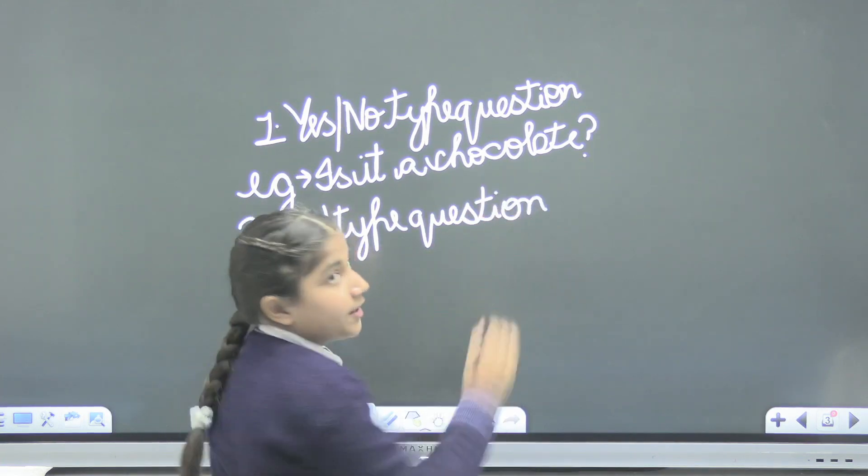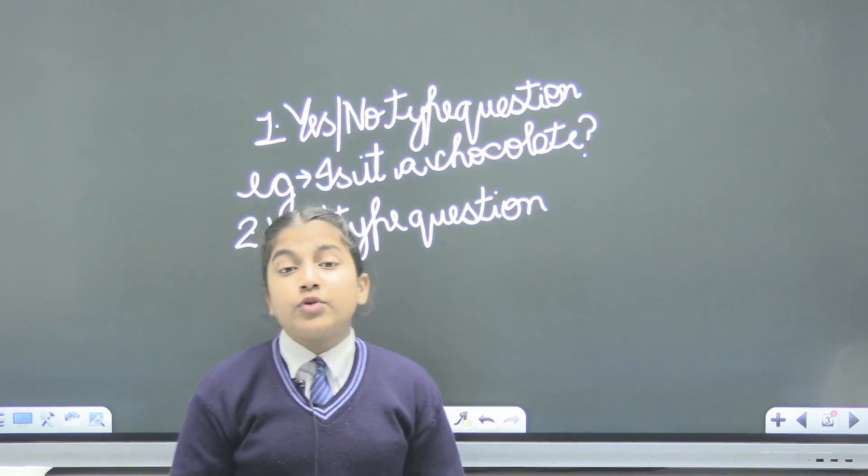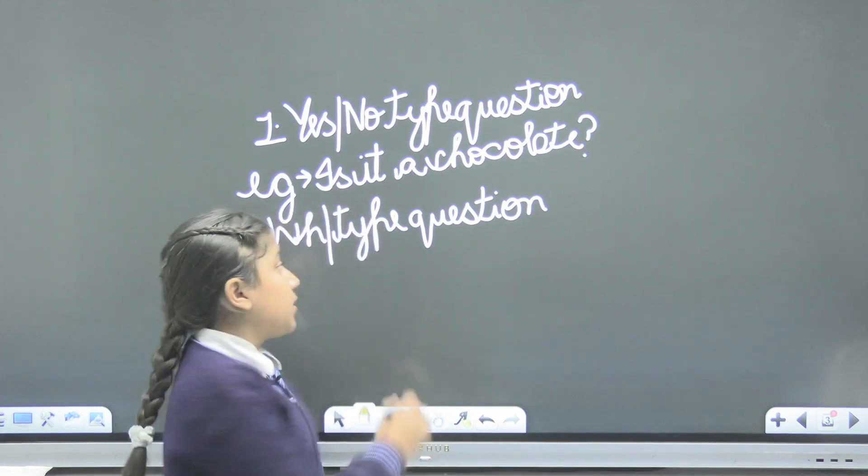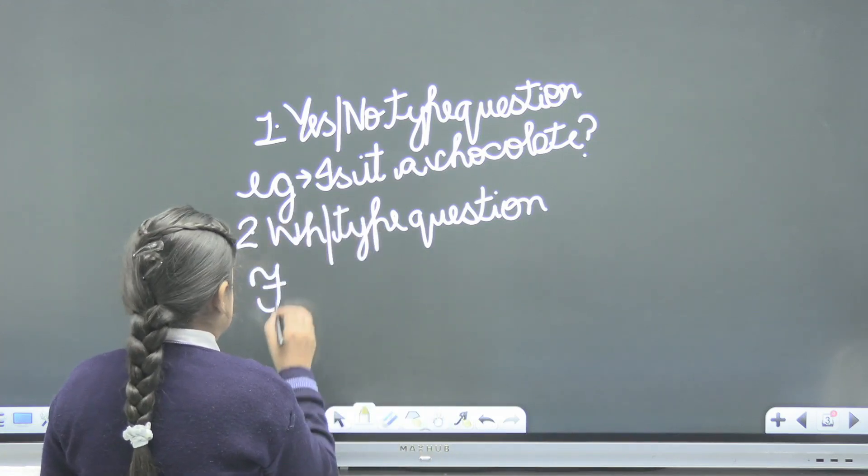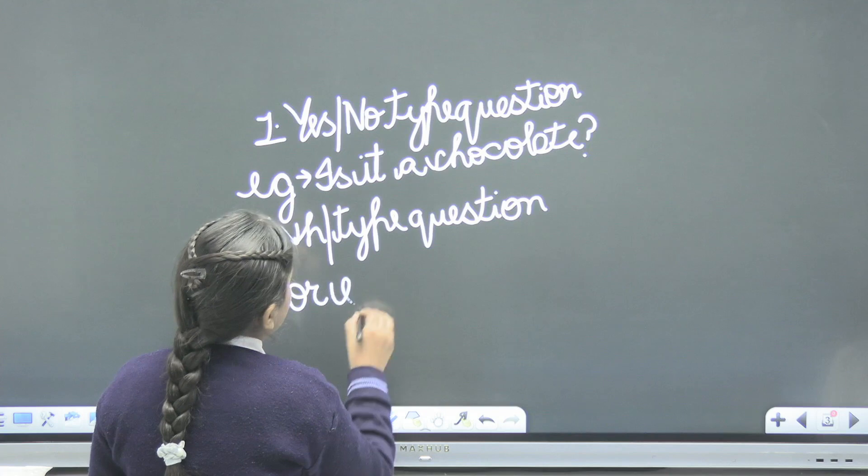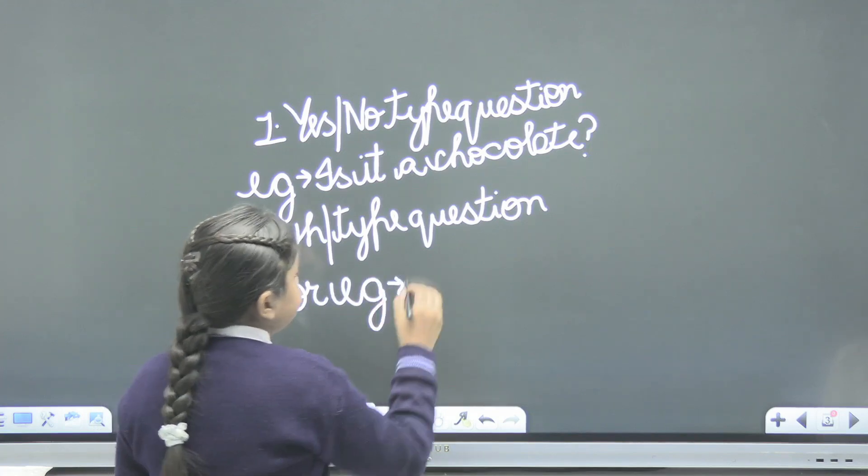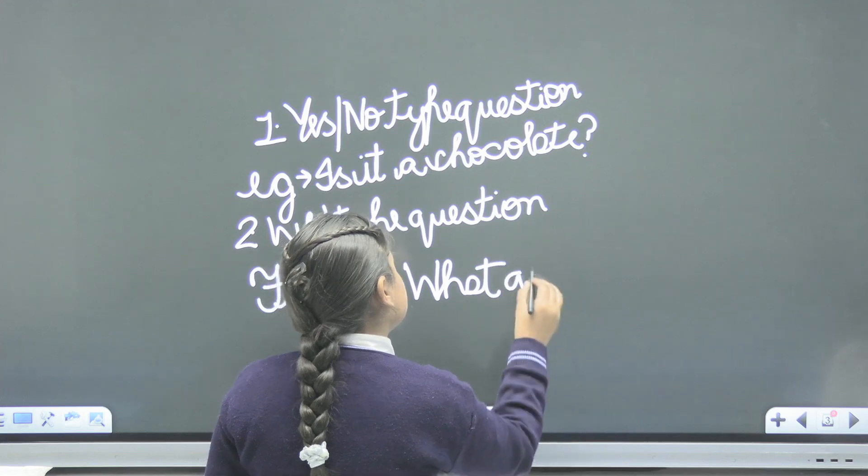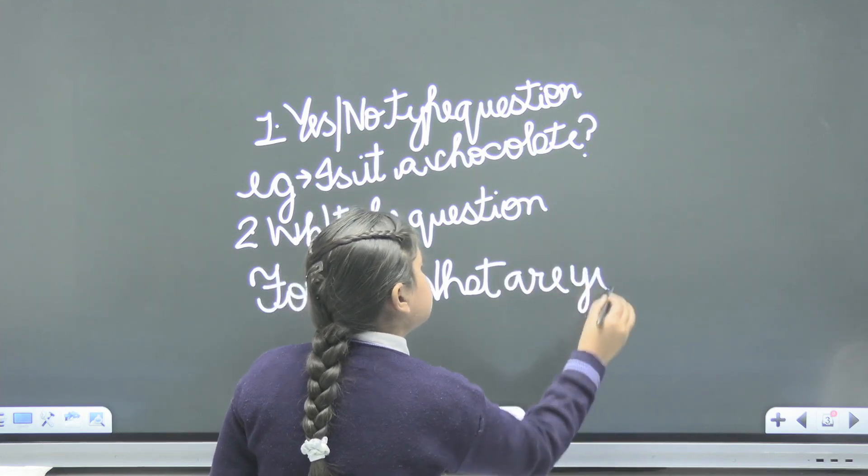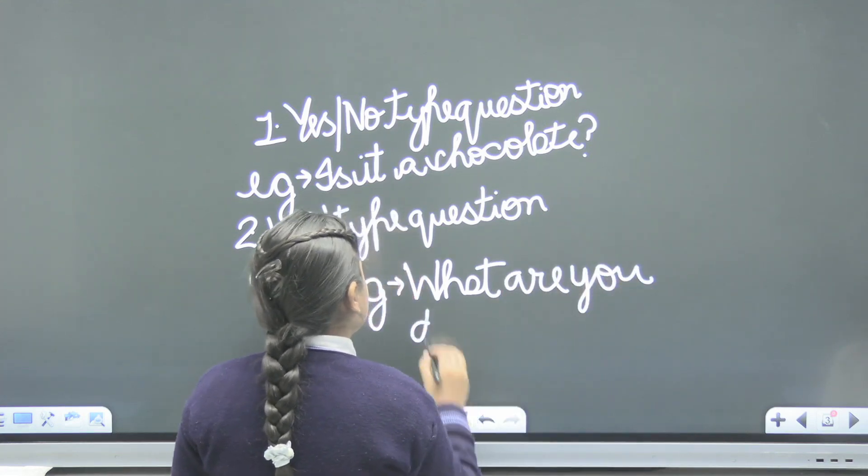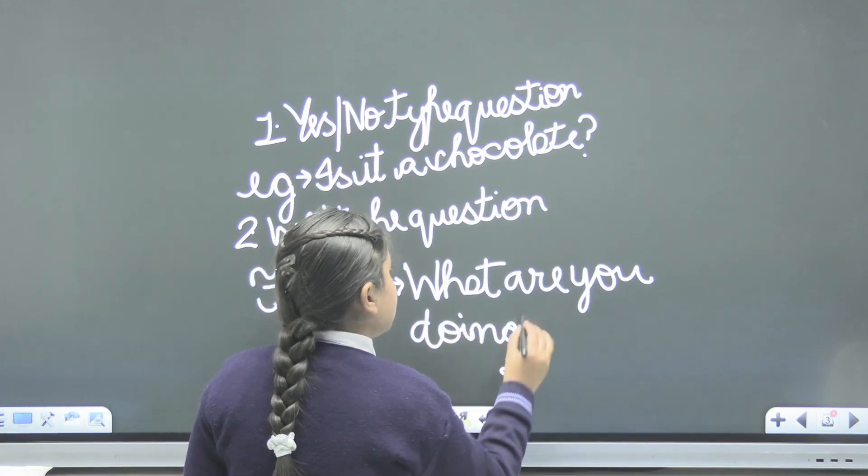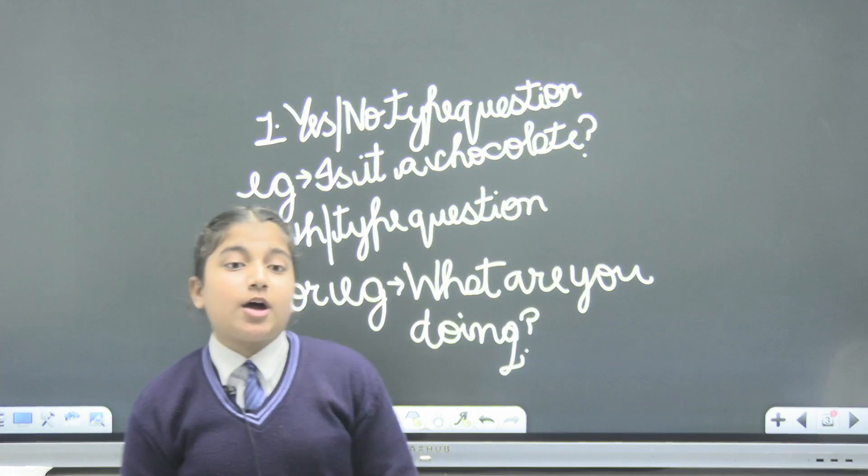The second is the WH type question. The WH type question starts with letter WH. For example, what are you doing? Where are you going?